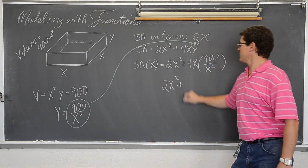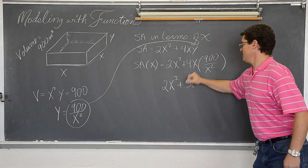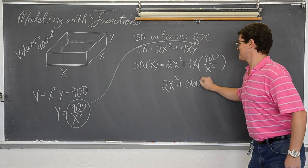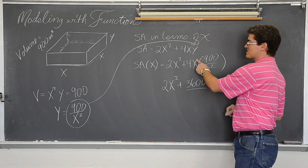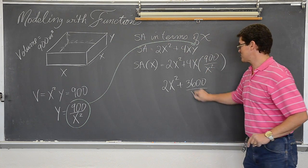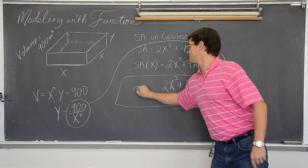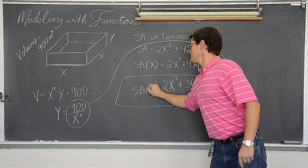2x² plus 3,600. Not 3,000. 3,600 over... this is x on top and this is x² on the bottom. Some of those will cancel out, leaving me with just an x on the bottom. And that is surface area in terms of x.